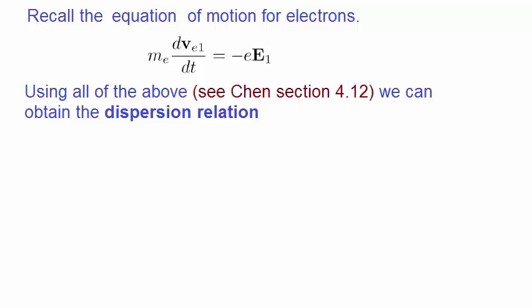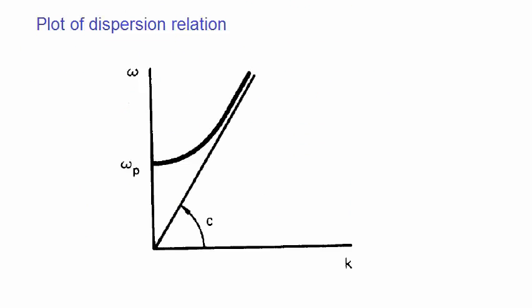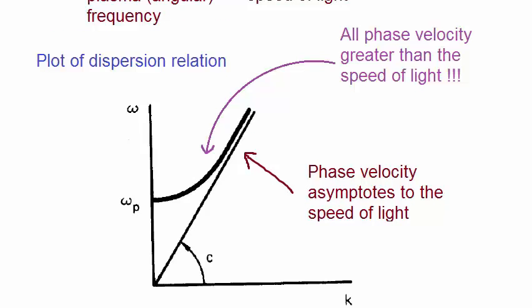The dispersion relation ends up being of this form, where ωp is the plasma angular frequency and c is the speed of light. Let's plot this dispersion relation and look at a couple of interesting features. Notice that the curve asymptotes the speed of light for very large k values, but what's interesting is that the phase velocity of the electromagnetic wave in the plasma is greater than the speed of light for any k value less than infinity.